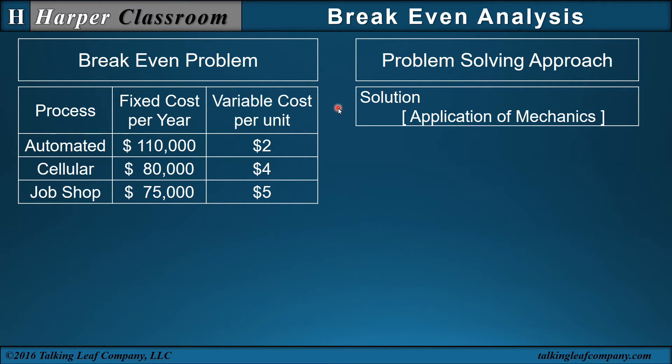Second, let's look at the solution for the application of the mechanics. Once we know what kind of problem it is, then how do we find the break even? I will approach this in two ways. First, understand the problem. And two, validate your answers with mathematics. Now, these two need to go together. They support one another. First, understand the problem. If I look at cellular and job shop here, if I produce zero, then my cellular is $5,000 more than my job shop. But when I start producing, cellular will save $1 per unit of production.